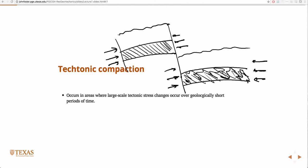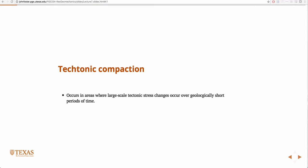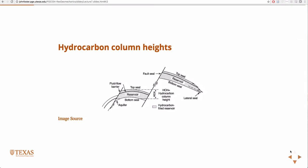So that's tectonic compaction. Another reason for overpressurization is just hydrocarbon column heights — the fact that hydrocarbons are more buoyant than water. Specifically, if you have a lot of gas in the reservoir, there's very buoyant gas at the top of the reservoir, and that would be at a higher pressure than the water. This is evidenced in real wells.